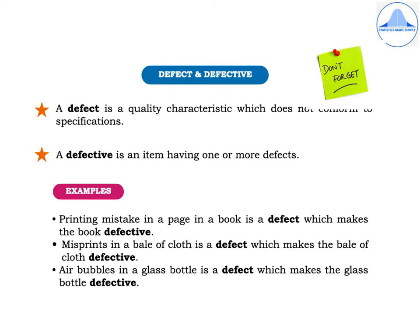More important terms are Defect and Defective. A defect is a quality characteristic which does not conform to specifications, whereas a defective is an item having one or more defects.